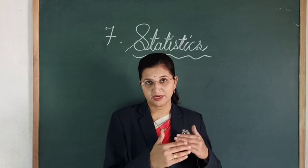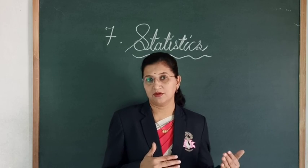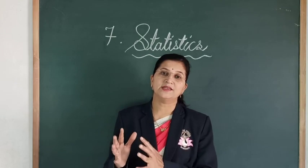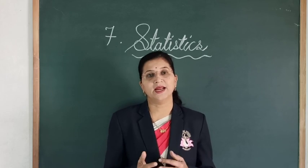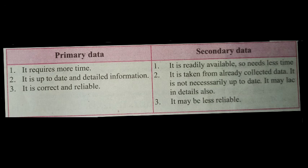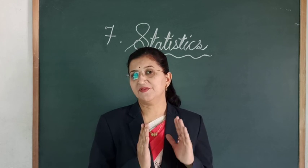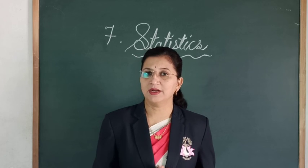In primary data, we are personally visiting the place or the person. In secondary data, we are referring to information that is already collected and recorded. Primary data requires more time, while secondary data is readily available and needs less time. Primary data is up-to-date and detailed, while secondary data is taken from already collected data and is not necessarily up-to-date and may lack details. Primary data is correct and reliable, while secondary data may be less reliable.